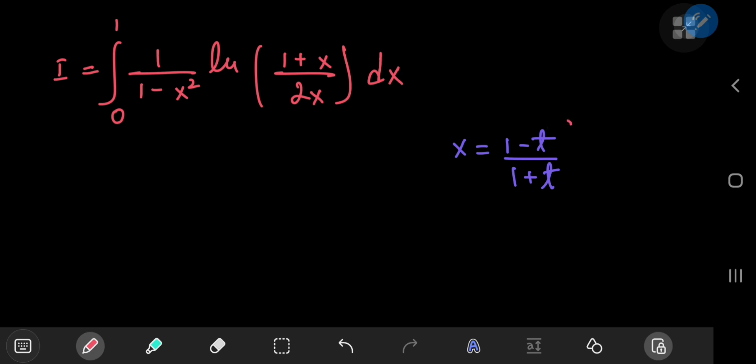Now if we make use of the substitution, this will imply that the differential element dx equals negative 2 dt by 1 plus t squared.